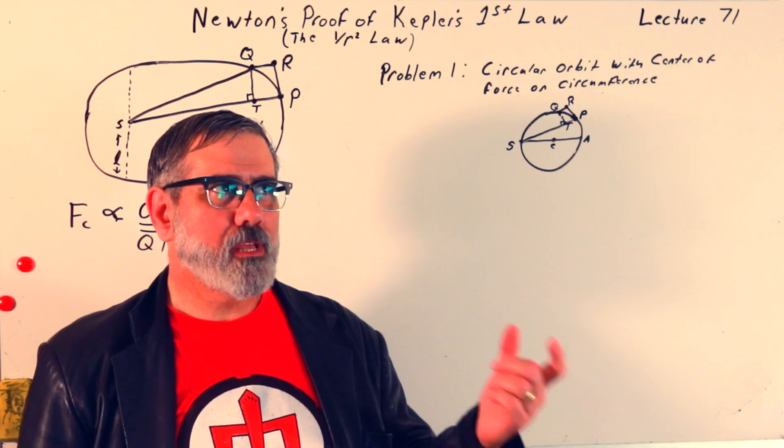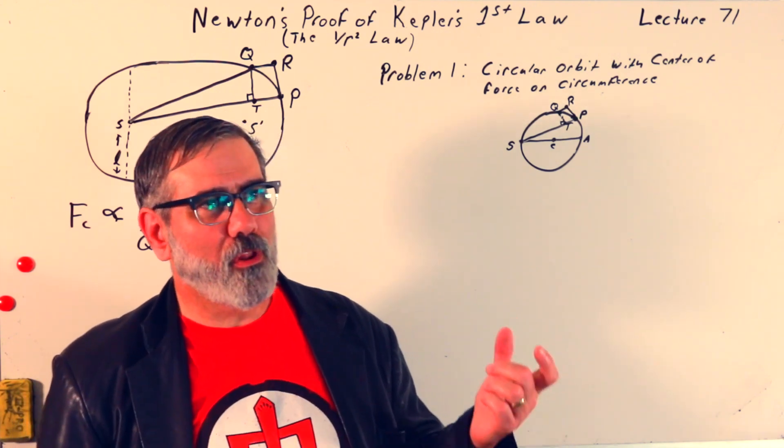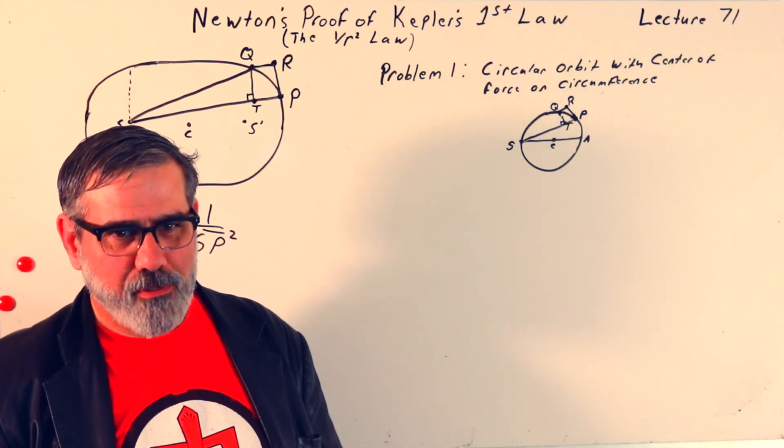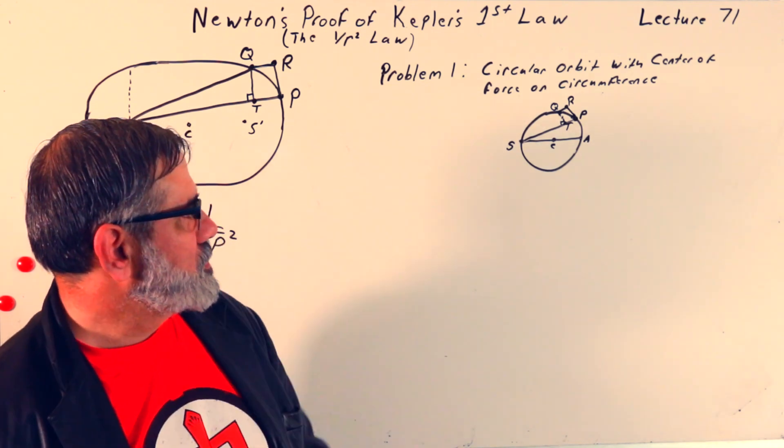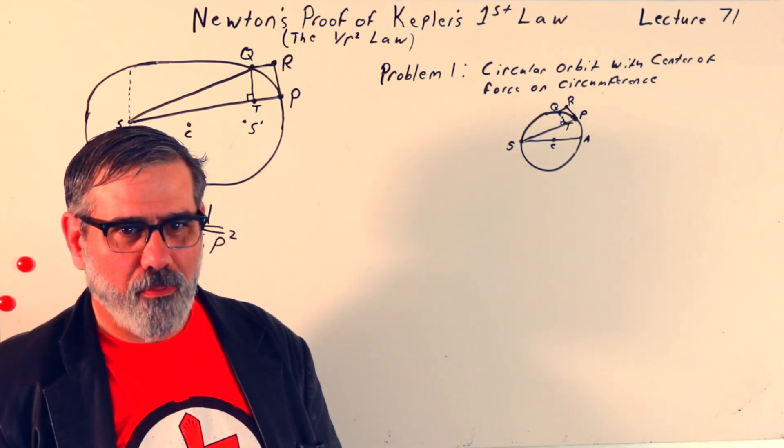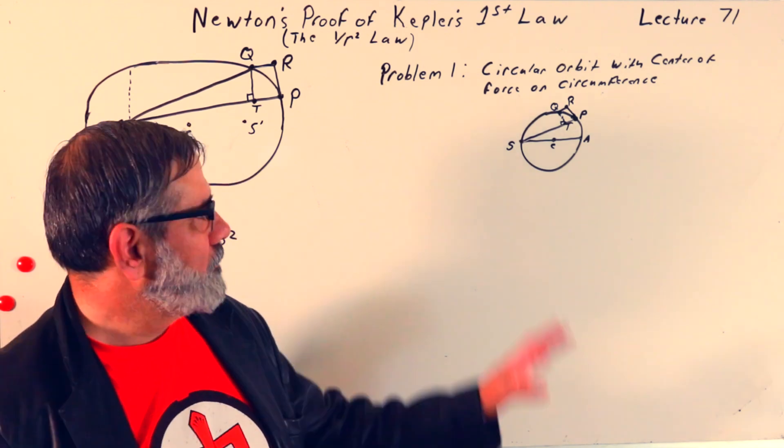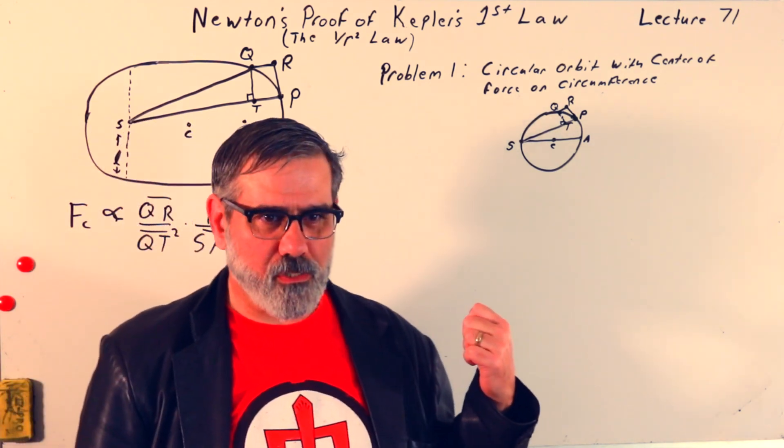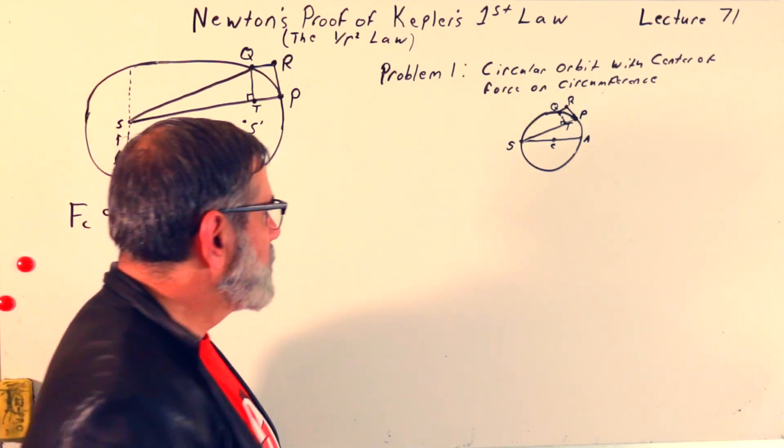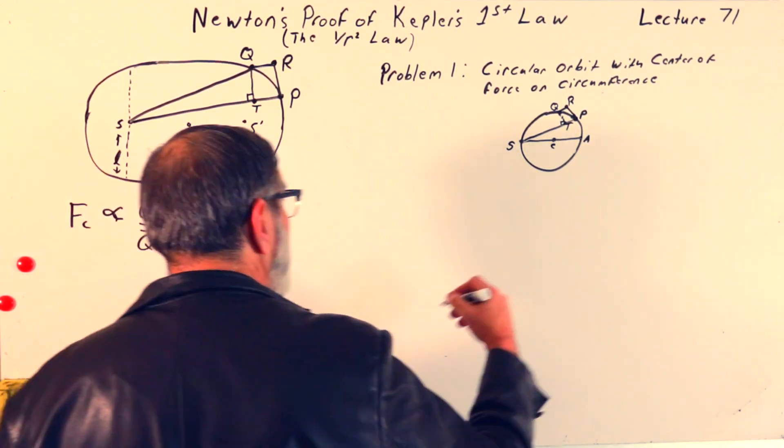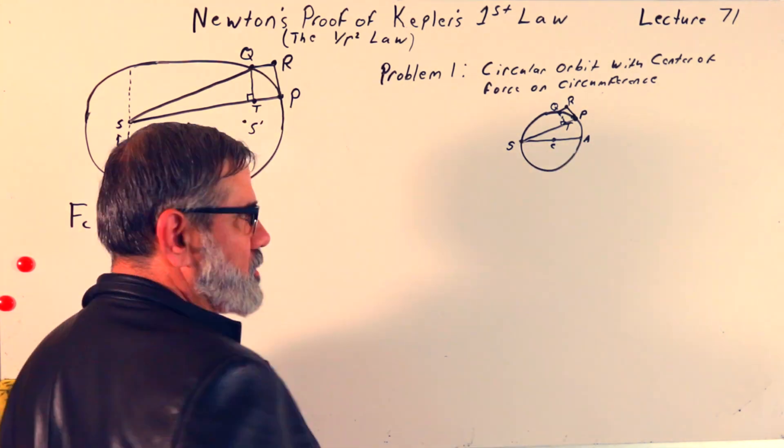So, if that was the empirical result that we had, if somebody had made astronomical observations and said, look, I see that this is what we get, if they said, if Kepler's first law was, instead of being ellipses with the force center at one of the foci, if instead it was orbits are circular with their force centers on the circumference of the circle, that's what he's analyzing here, and it turns out to be the easiest problem to solve, geometrically. I'm not going to solve it, but, so what he ends up finding out in this case, where S A, by the way, is the diameter of the circle, this point A here.